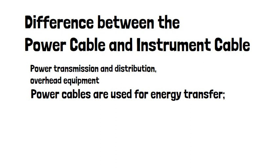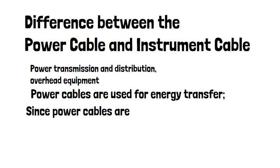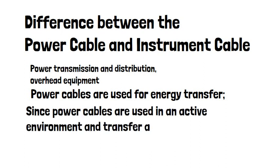2. Power cables are used for energy transfer, whereas instrument cables are used for signal transfer. 3. Since power cables are used in an active environment and transfer a high amount of energy, they call for excellent sheathing.